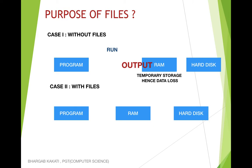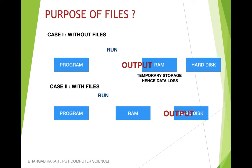Now let's go to Case 2 — with files. There are still three things: program, RAM, and hard disk. When you run a program, the output goes to RAM. If you want to store that output permanently, while it is in RAM you need to transfer it from RAM to the hard disk. Only then can you store it permanently. Once stored permanently, you can write to it or read from that file at a later point of time. In one line, the purpose of files is: storing data permanently and retrieving that data at a later point of time.